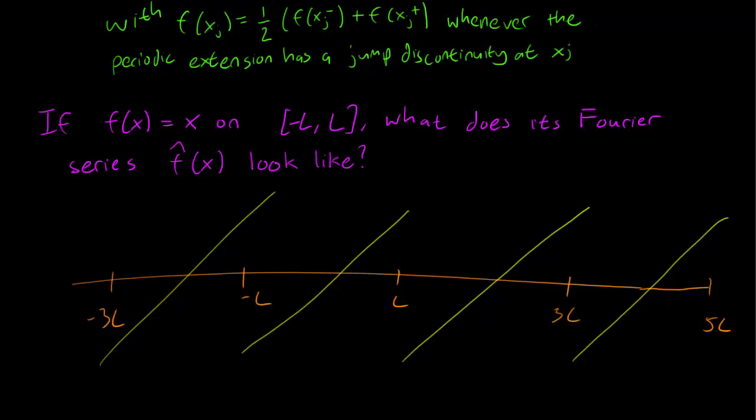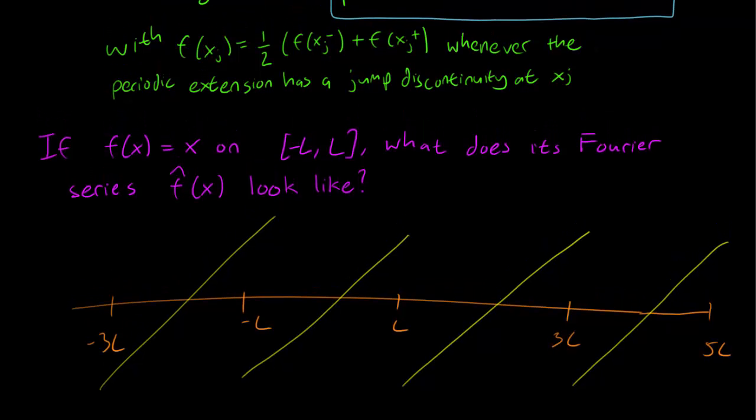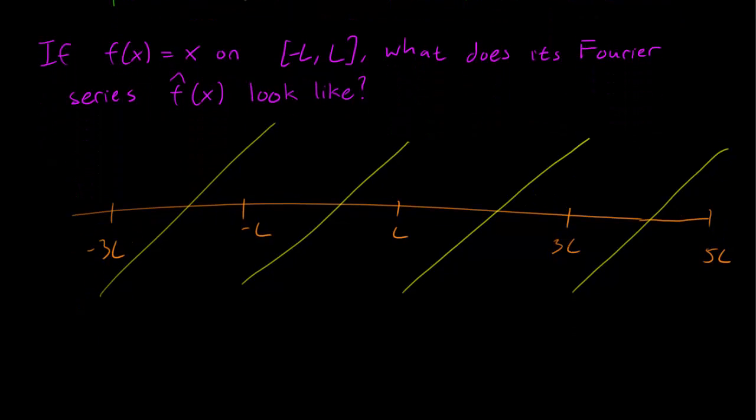But the second part of Fourier's theorem says that at the jump discontinuities, the function sort of meets halfway. And we can see that there are going to be jump discontinuities here at 3L, L, minus L, and minus 3L. So for those points, we have to meet halfway. So we just have a function here, a point here, a point here, a point here, and so on.